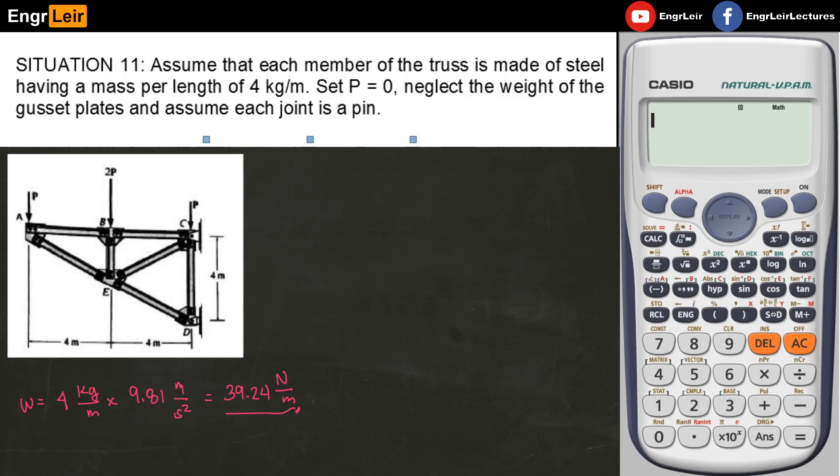Situation 11 for problems 32 to 34. I have here a truss made of steel having a mass per linear meter of 4 kilograms per meter. The question states to set P = 0, so ignore the P loads. Neglect the weight of gusset plates and assume each joint is a pin, so it's like an ideal truss. The weight of the members will act on the joints.